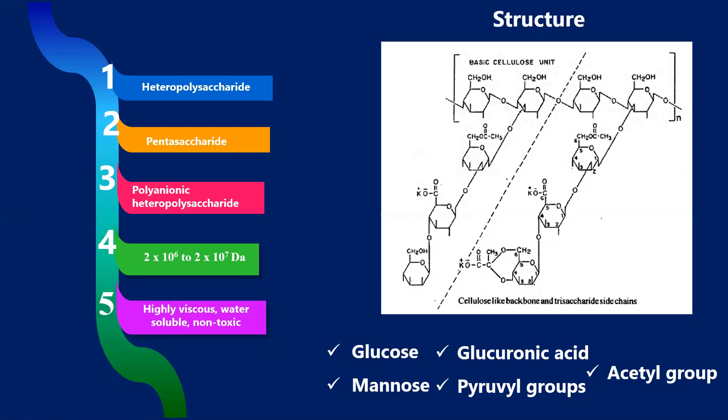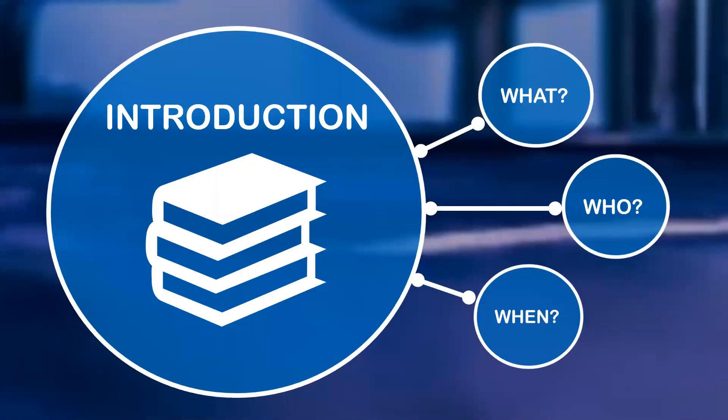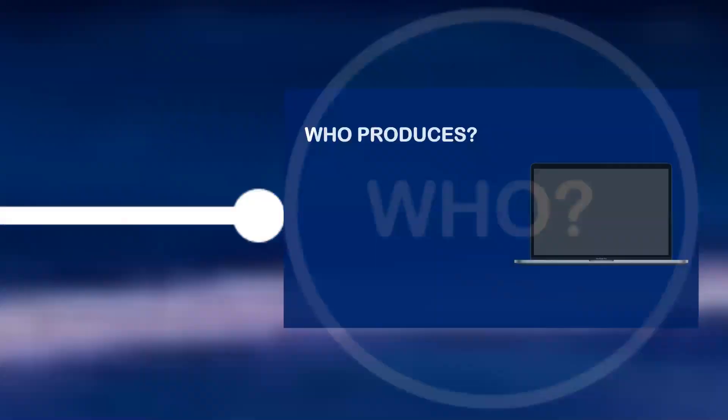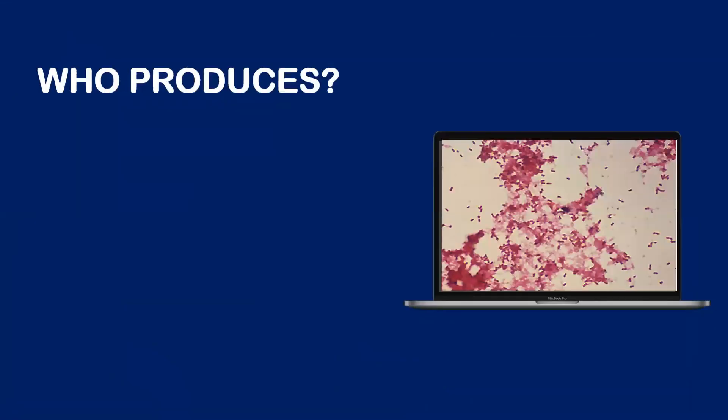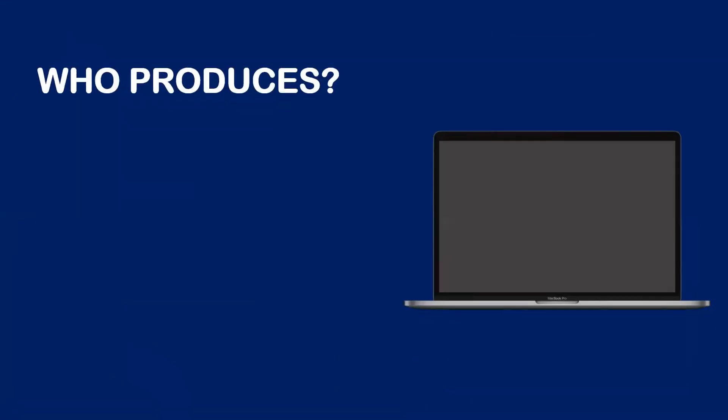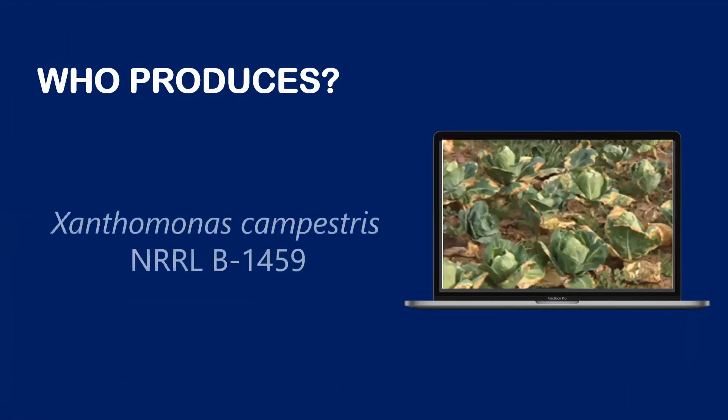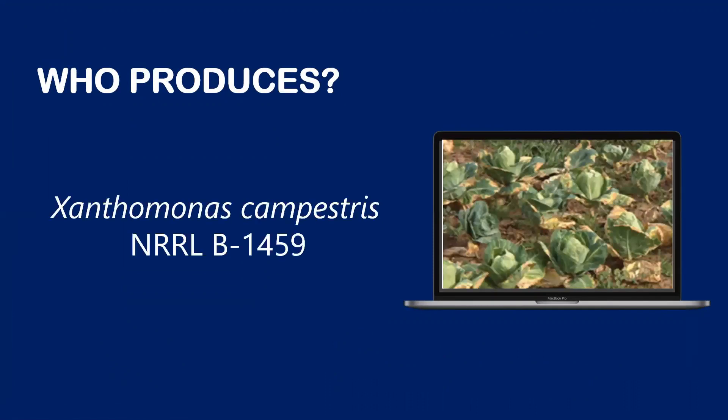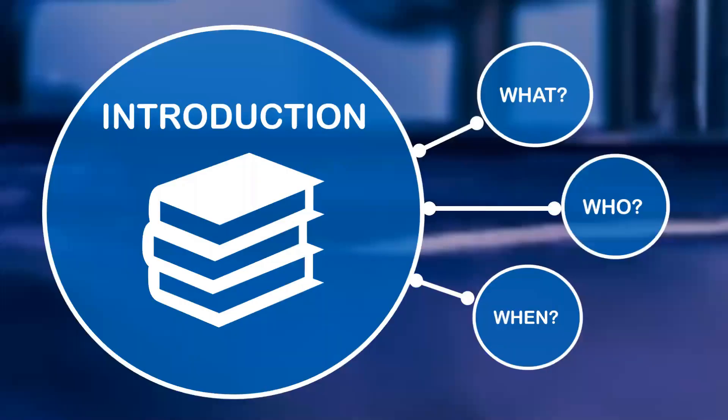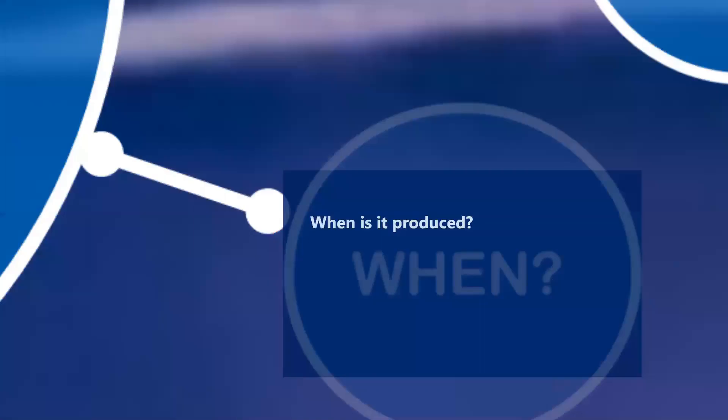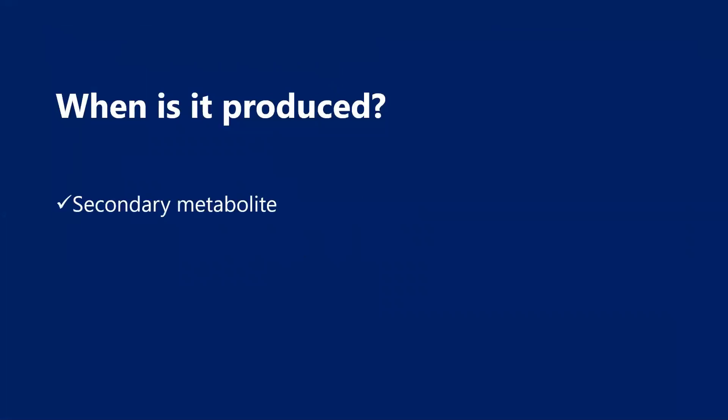Now who produces this xanthan? It is produced by gram-negative plant pathogenic bacteria Xanthomonas campestris. The numeric value that you can see on the screen is the industrial strain that is employed for the production of xanthan. When is xanthan produced? As it is a secondary metabolite, it is produced in the stationary phase of the growth cycle.